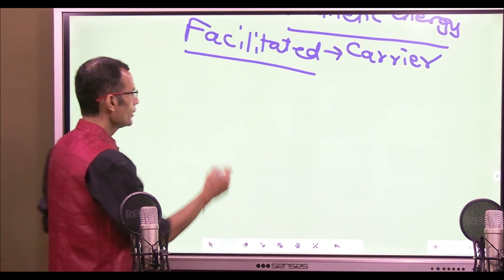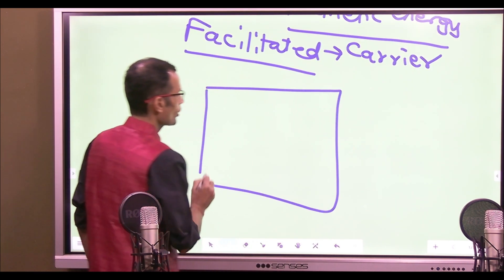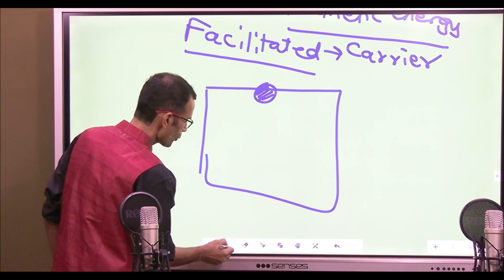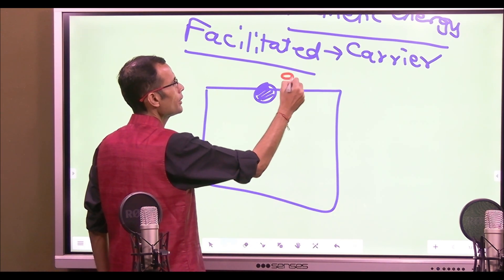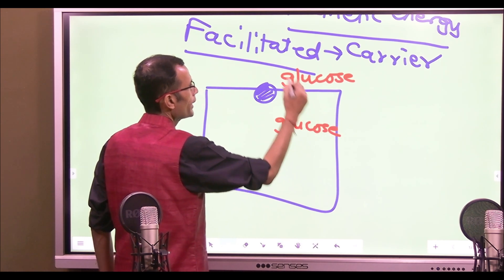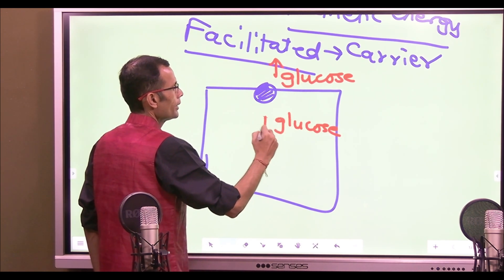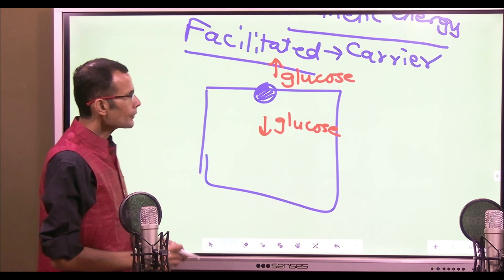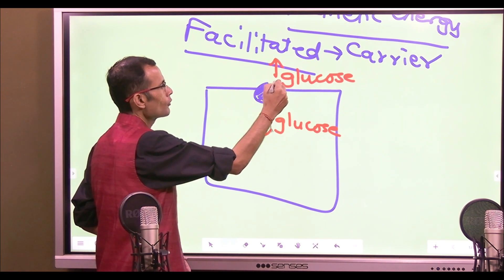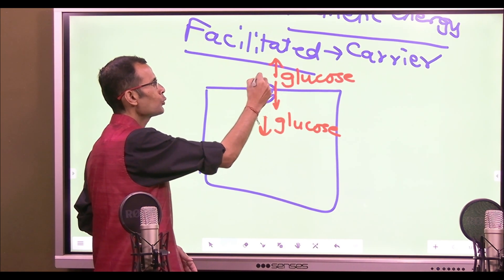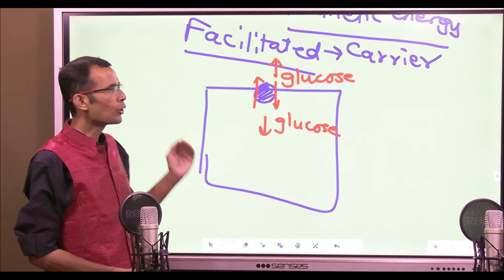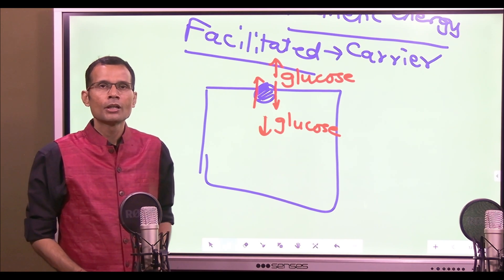The carrier transports a particular substance — let's say glucose. Glucose is high on the outside and low on the inside of the cell. This carrier can carry glucose from high to low or low to high, but net transport occurs always from high to low concentration.